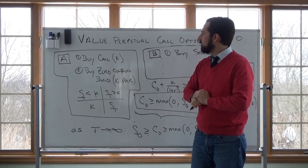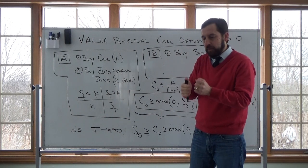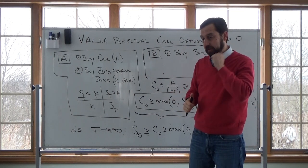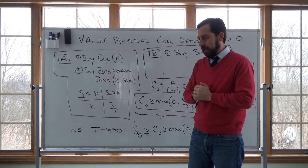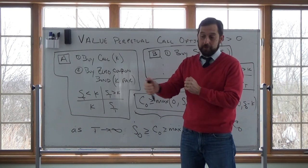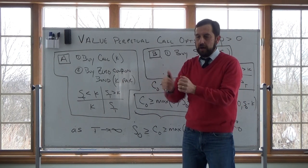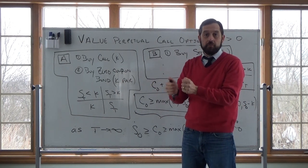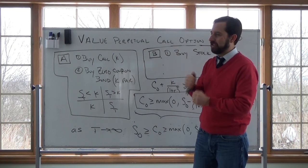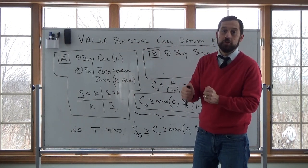What we're going to talk about here is the value of a perpetual call option. And what this is also going to do, maybe even more importantly, is give us an intuition as to how call options and put options relate to changes in the risk-free rate. So this is going to be the Greek rho. We're going to derive the value of a perpetual call option and then get some intuition as to what rho should be.